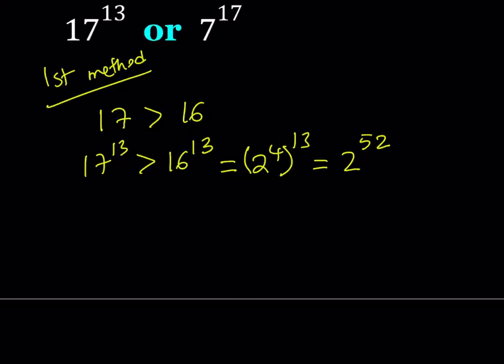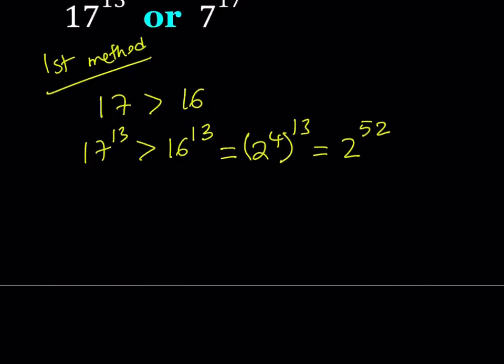At the end I'm going to give you the numerical values after we're done with both methods. Let's take a look at 7 to the power 17. Since 7 is less than 8 we can compare this number to 8 to the power 17, and since 8 can be written as 2 to the third power, this is going to be 2 to the third to the power 17, which can be written as 2 to the power 51.